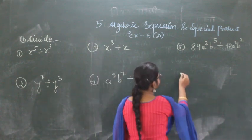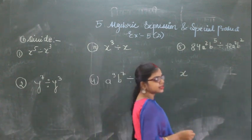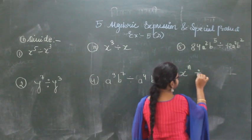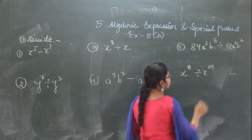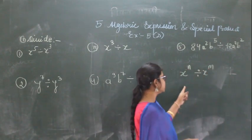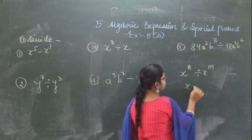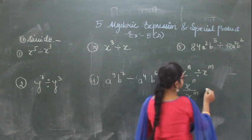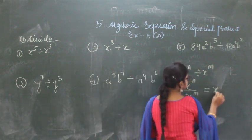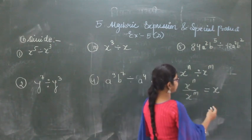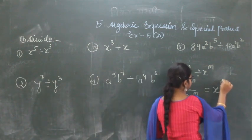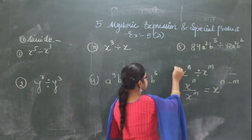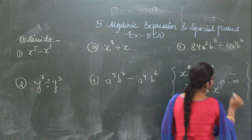Suppose you have the same base. For example, x to the power of m divided by x to the power of m. If the bases are same, first convert this into a fraction. You can write this as x to the power m upon x to the power m. Here you can use the formula — when bases are same, the powers will be subtracted, giving x to the power m minus m.